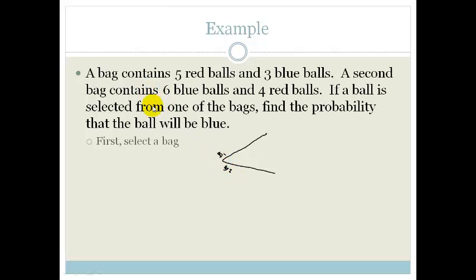Since there are two bags, we've got a 50-50 chance of choosing one of these bags. Therefore, the probability of choosing bag one is one half, and the probability of choosing bag two is also one half.